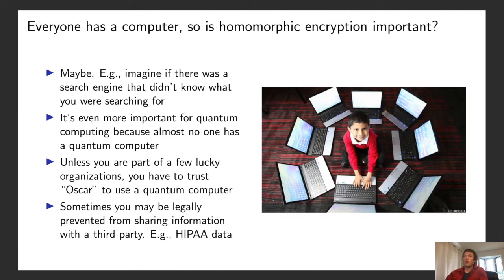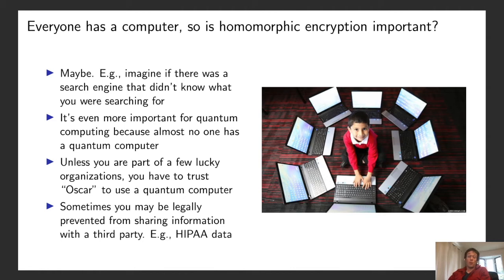You may be thinking that the setup for homomorphic encryption sounds a little ridiculous — Alice needs to perform a computation but doesn't have a computer. Since computers are so ubiquitous, is homomorphic encryption still important? The answer is probably yes. A good example is search: we search for web pages all the time, Google collects information about us based on our search history, and it would be nice to have a search engine that didn't know what you were searching for.